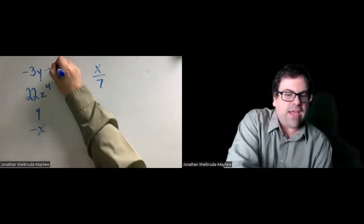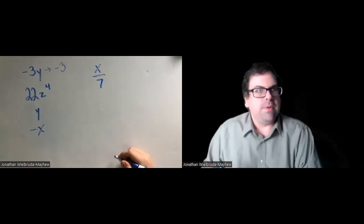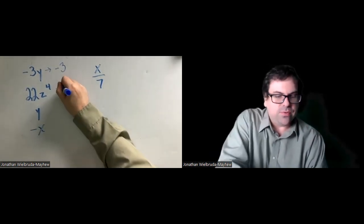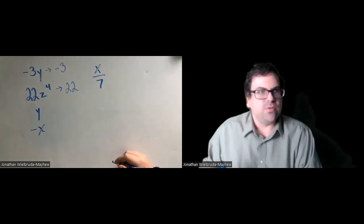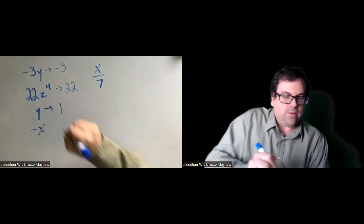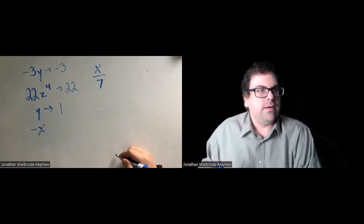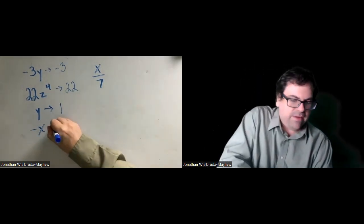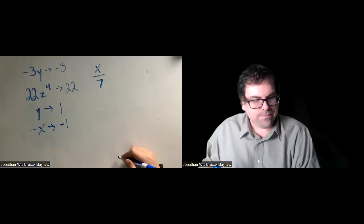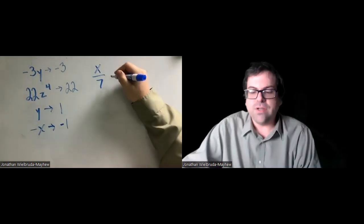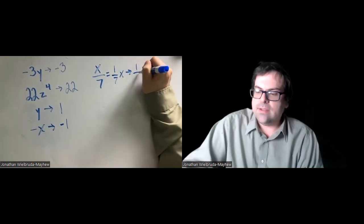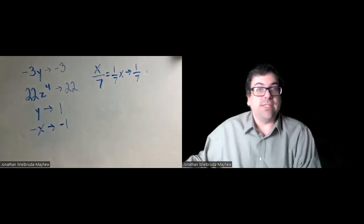The coefficient of negative 3y would be negative 3. The coefficient of 22z to the 4th would be 22. The coefficient of y would be 1. The coefficient of negative x would be negative 1. And the coefficient of x over 7, since x over 7 would be 1/7 x, the coefficient is just 1/7.